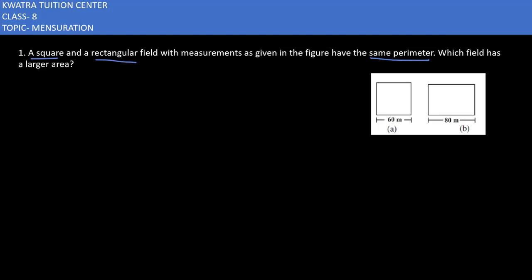Now let's first write the perimeter of the square, which is the first diagram. Perimeter of a square — how do we find it? It is 4 into side. The side mentioned here is 60, so that means the perimeter is 4 into 60, which equals 240 meters.